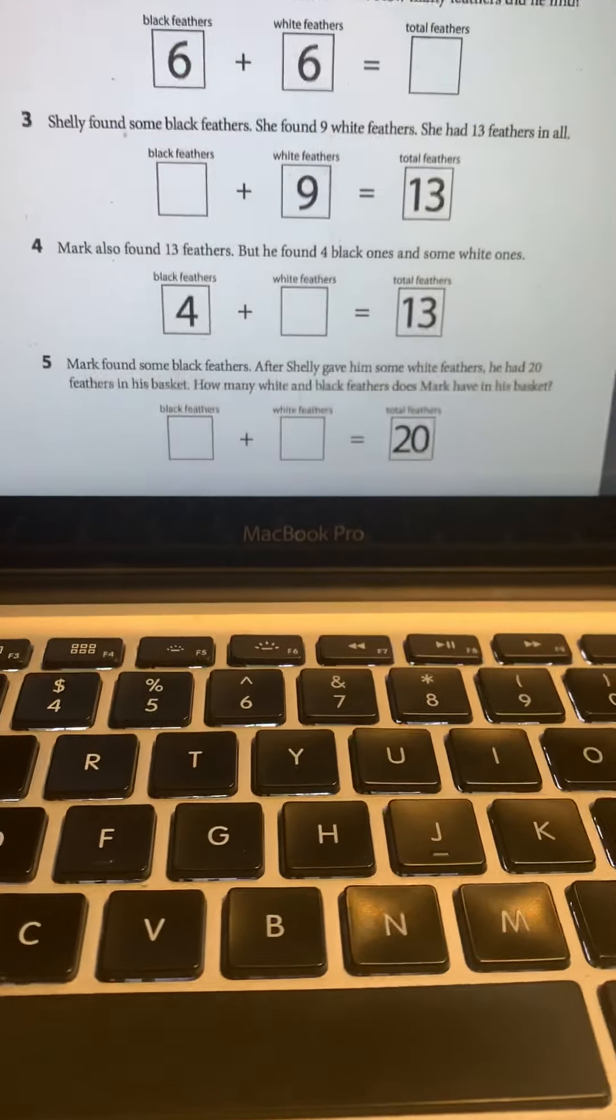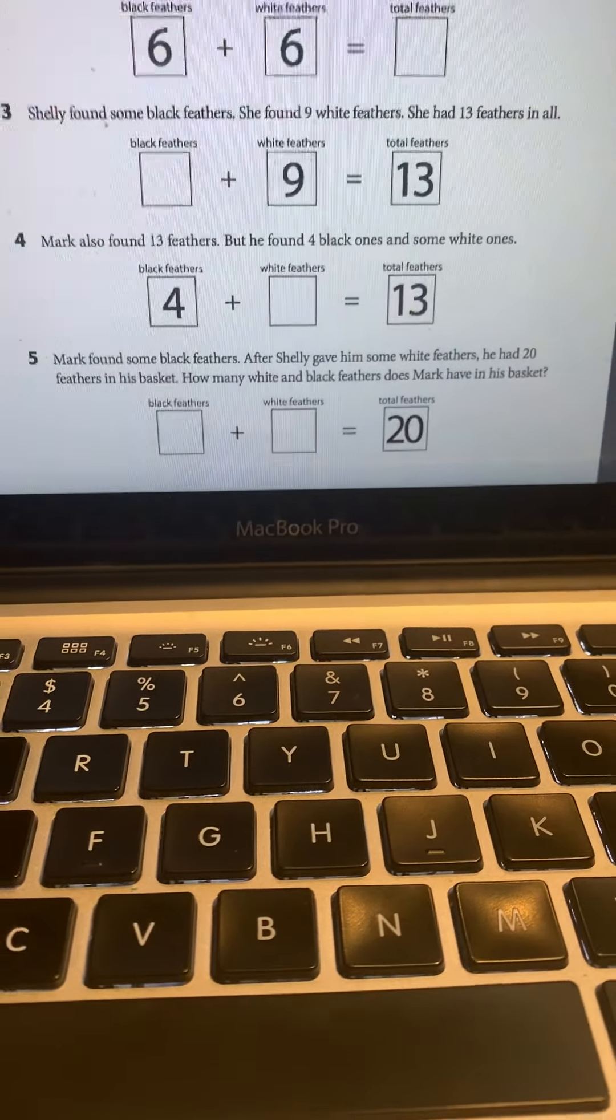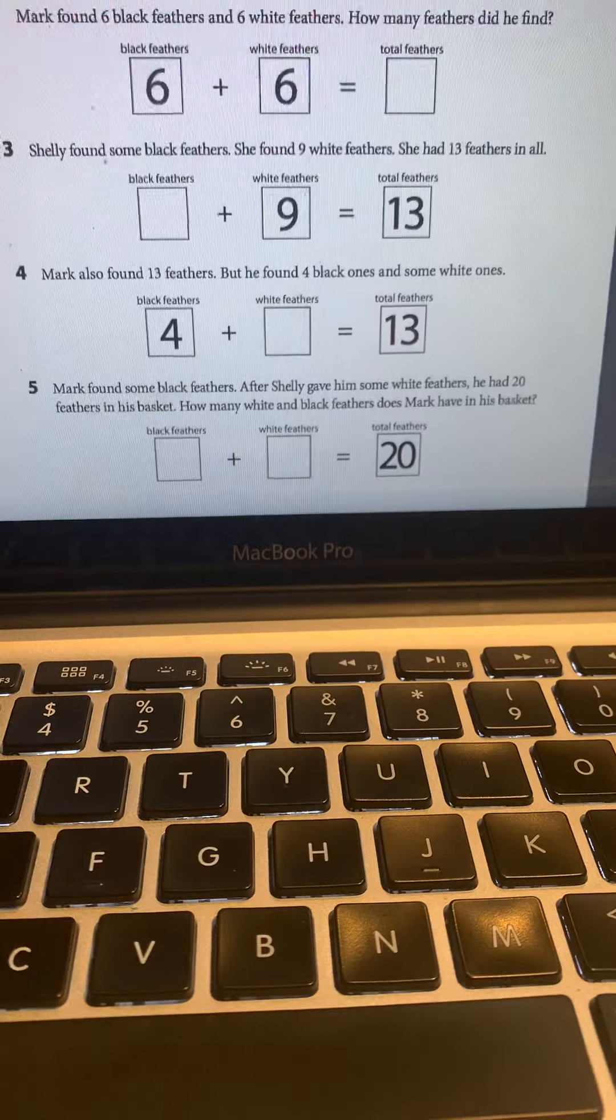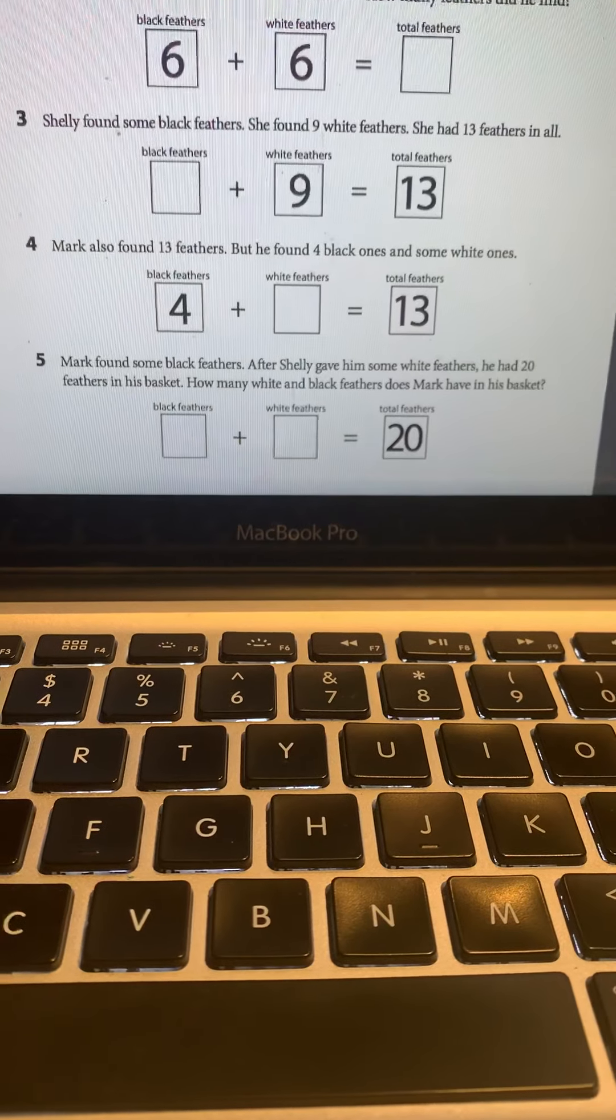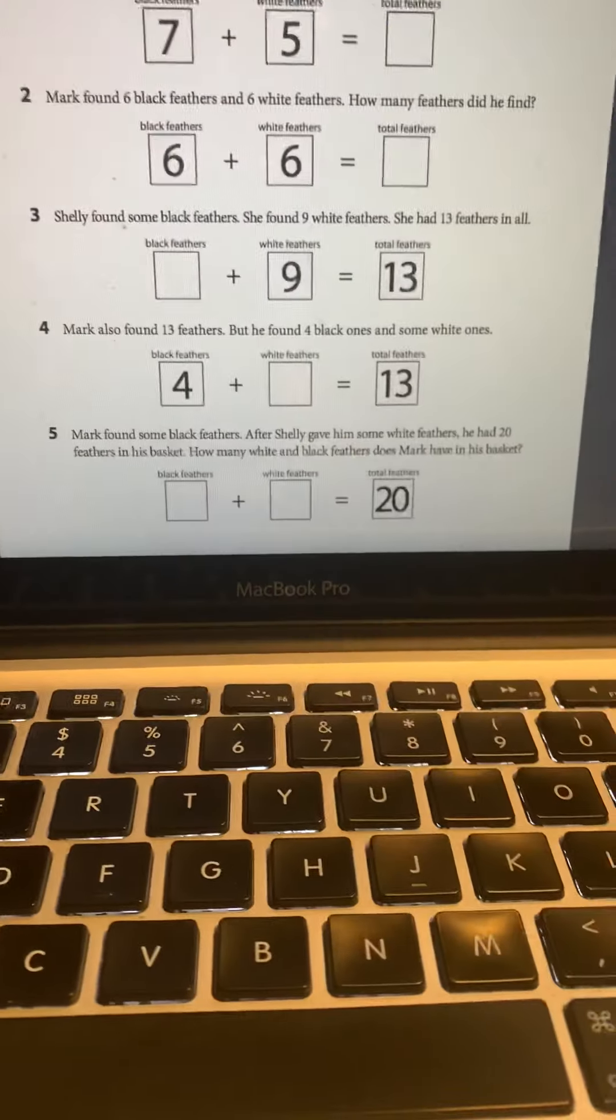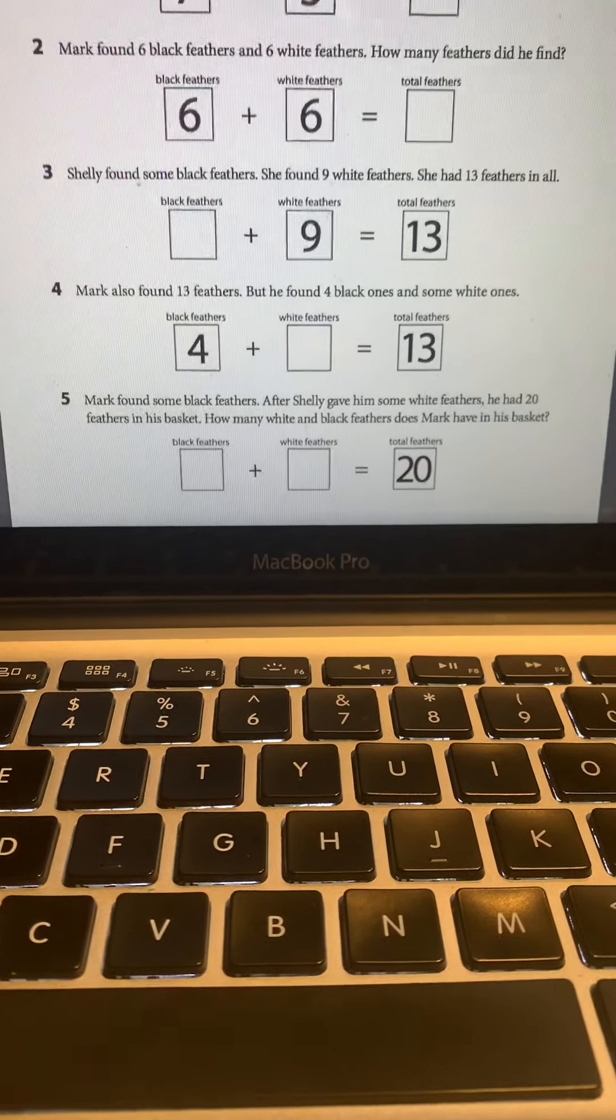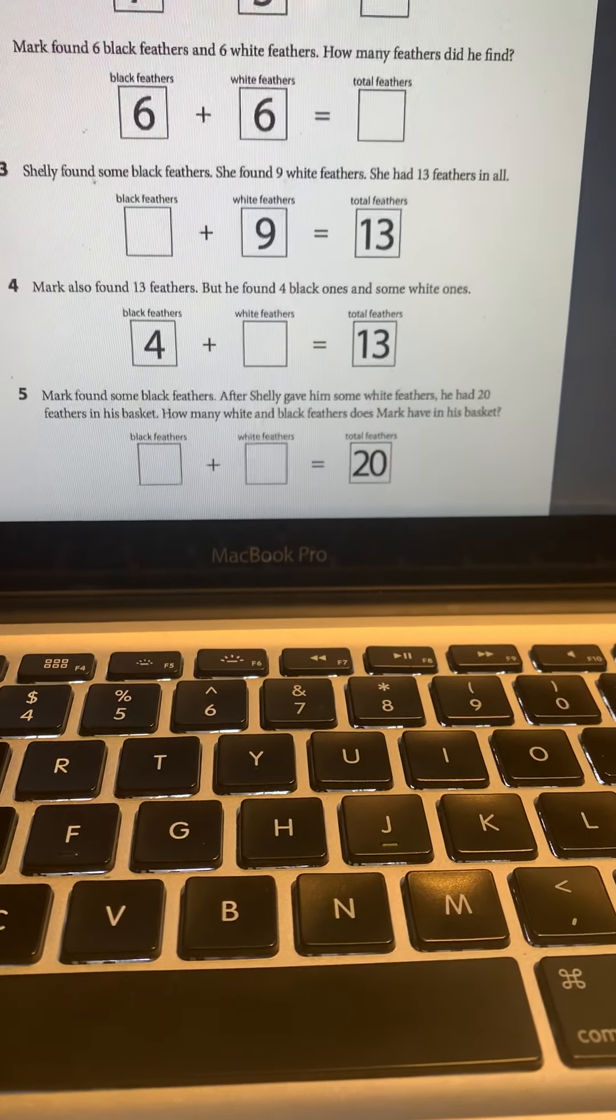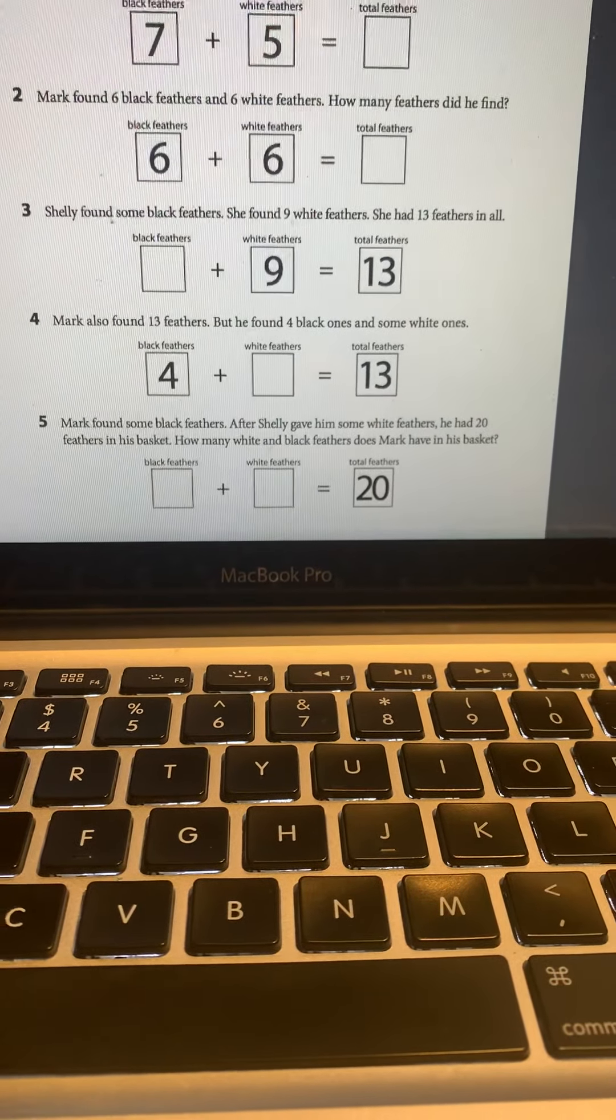All right. Last one. Mark found some black feathers. Shelly gave him some white feathers. He had 20 feathers in his basket. How many white and black feathers does Mark have in his basket? Now, this one is totally up to you. You can find two numbers, one and two, that equal 20. So I want you to take a moment and find two numbers that equal 20 when you add them up. It's not a right or wrong answer. Your number does not have to be the same as my number. As long as your total equals 20, you've got it correct.